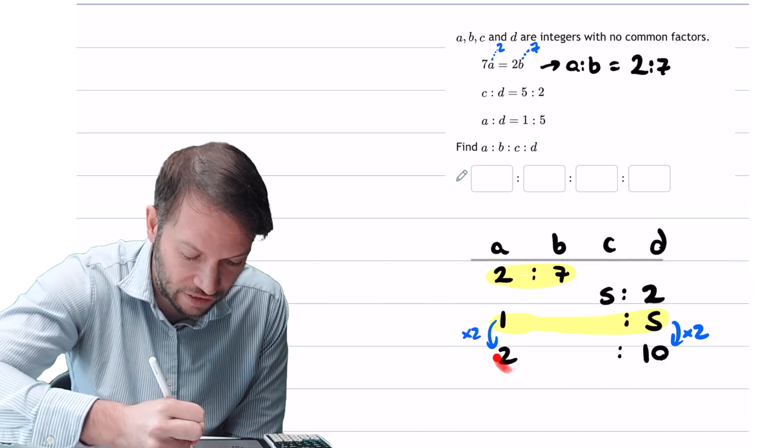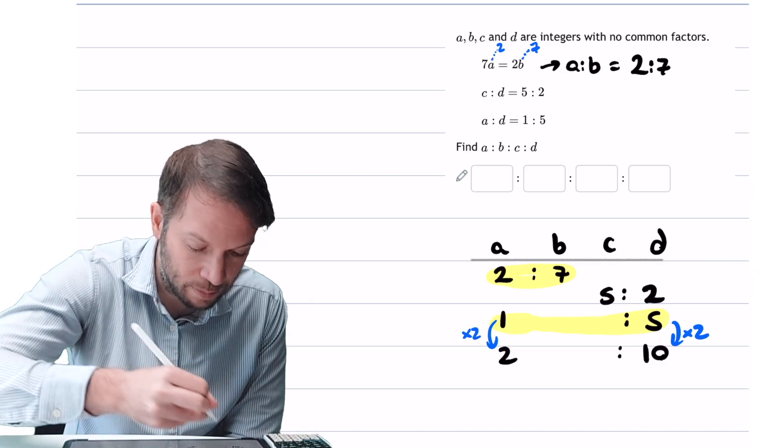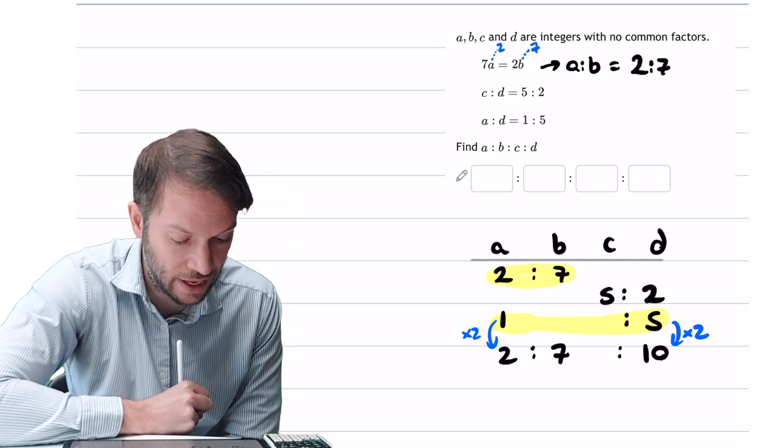But now because these 2s are the same, we can just write the 7 in this gap here. So we've got the ratio of a to b to d is 2 to 7 to 10, like that.